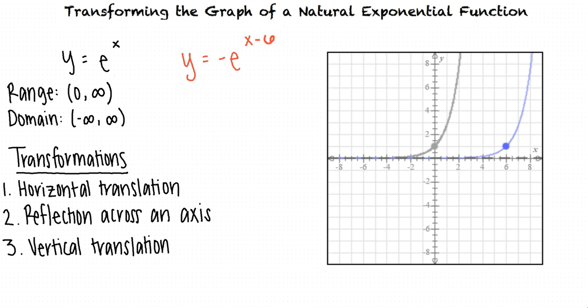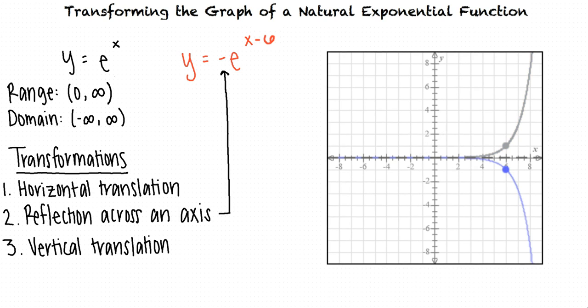You're right that we need to reflect the graph across an axis. Since the whole e expression is negated, we reflect the graph across the x-axis. If the x in the exponent had been negated, we would have reflected the graph across the y-axis.